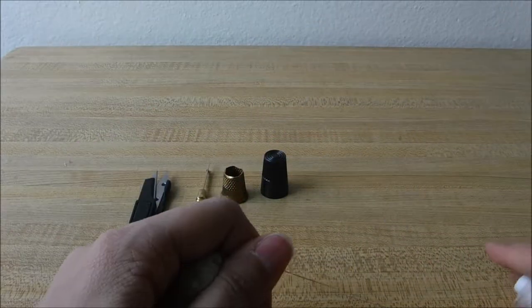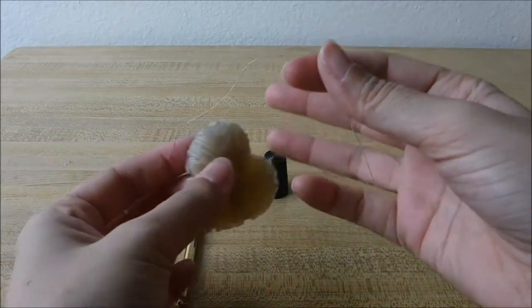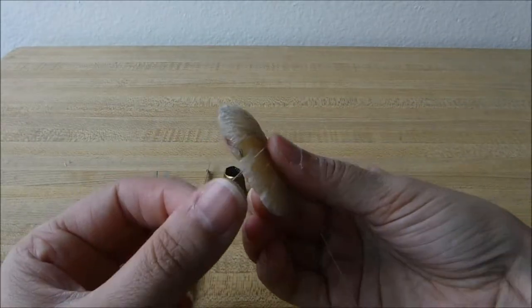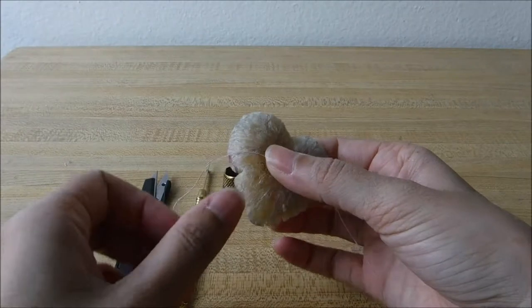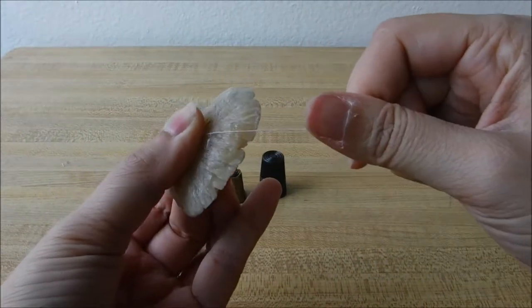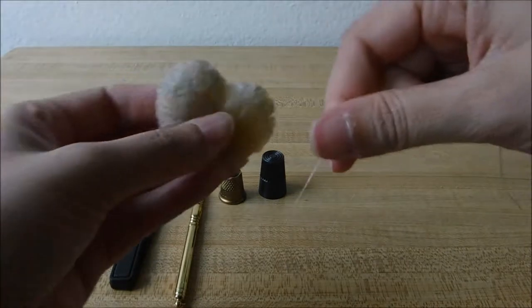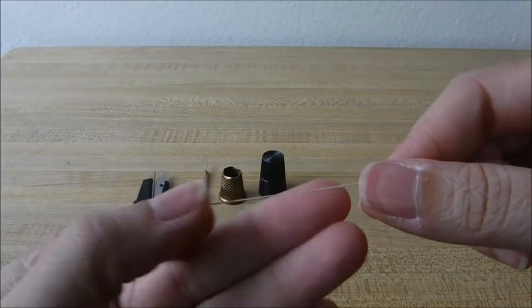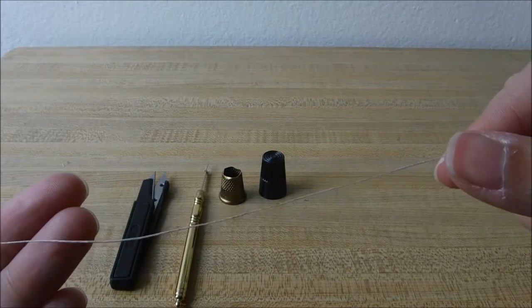It prevents the thread from binding and knotting on itself as well as unraveling. It gives you a really nice stiff piece of thread to work with. You don't have to cut out any tangled stitches. Whenever I sew, I will always use beeswax on my thread. I will never not wax my thread.